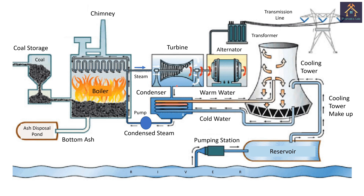The low pressure steam coming out from the turbine is condensed at the condenser and then converted into water and pumped into the boiler again. For cooling down the steam in the condenser, a continuous cold water is supplied. The heat of the condenser circuit is exchanged at the cooling tower. For make-up water at the cooling tower, water from a nearby river is pumped through the reservoir and fed to the cooling tower circuit. This process continues and runs throughout the year. A thermal power plant runs on a modified Rankine cycle.